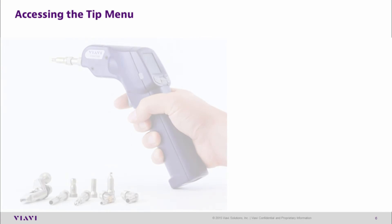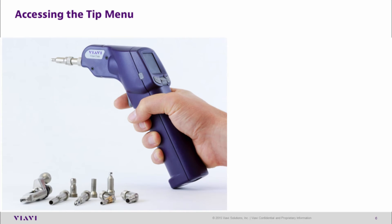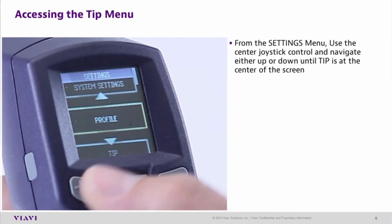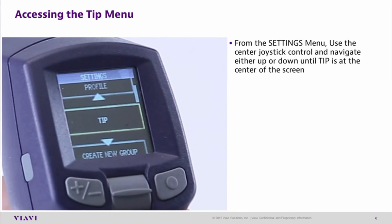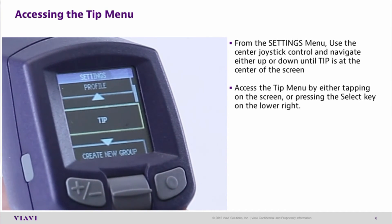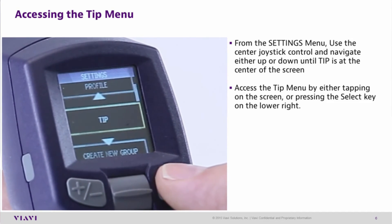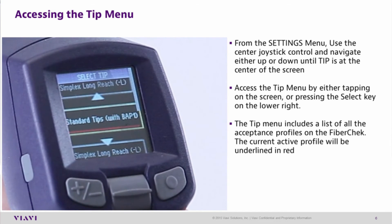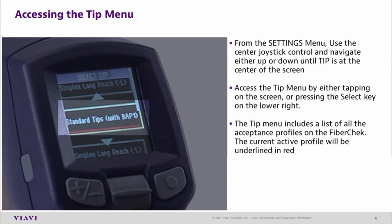Accessing the tips menu. The tip settings allows the user to select the best optical settings for the type of inspection tip that's currently attached to their probe. From the settings menu, use the joystick to navigate up or down until tip is at the center of the screen. Access the tip menu by tapping the screen or pressing the select key in the lower right. The tip menu includes a list of all acceptance profiles currently loaded on your FiberCheck probe. The current selected tip will be underlined in red.